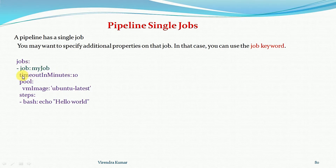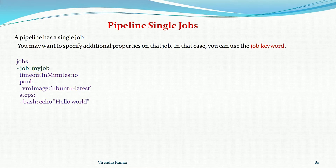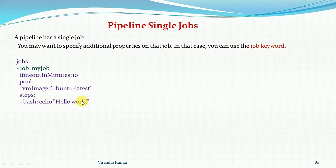Under the job, you define the pool on which it will run — specifying the VM image. This is a type-one agent job which runs on the VM machine. And for this job we have the steps, because as we know, a job is a series of steps which perform the smallest unit of work.